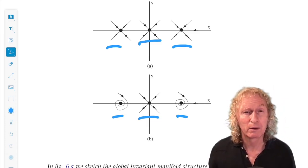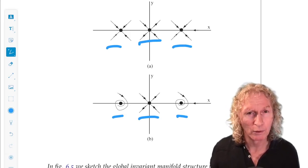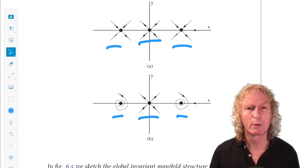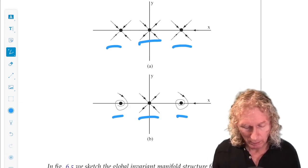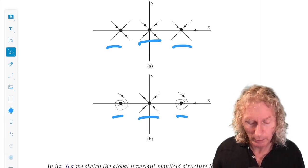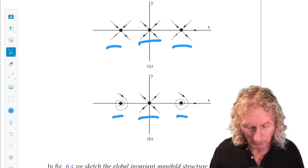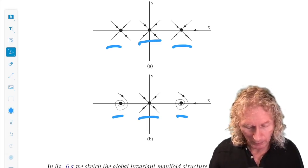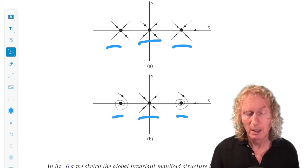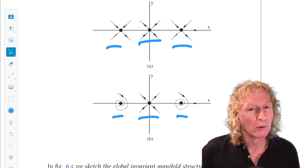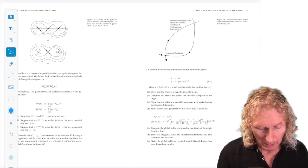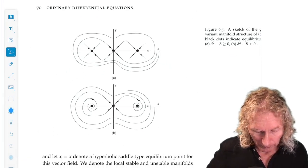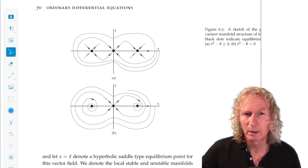These are the local manifolds, and this is something you should be able to do right now. Three different equilibria, two attracting equilibria, two sinks, one in the right half plane, the other in the left half plane with a saddle in the middle. What would the global manifolds look like in the two cases?